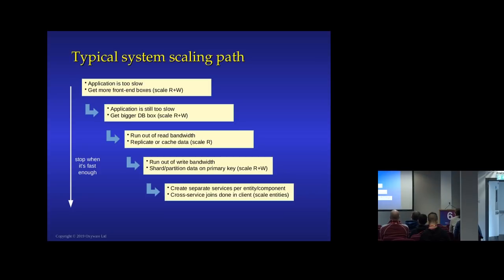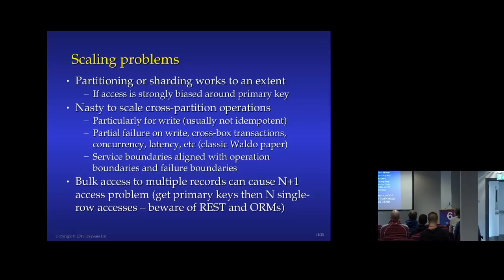If you try microservices, you get some other problems. Once you start splitting things up, you can no longer do joins directly in the database — you have to do them in the components themselves. Partitioning and sharding work well with a strong bias around primary keys — customer, order, product. But if you're doing analytics across lots of different things, or non-transactional data, sharding doesn't help you much. Scaling across partitions means distributed transactions, and that's a whole world of pain.